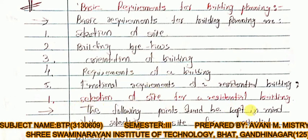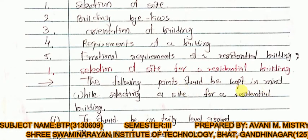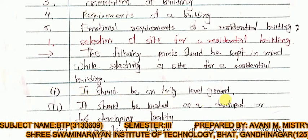The first topic is selection of the site for a residential building. The following points should be kept in mind while selecting a site. It should be on fairly level ground — the ground level should be uniform and level. It should be located in a developed or fast-developing locality.